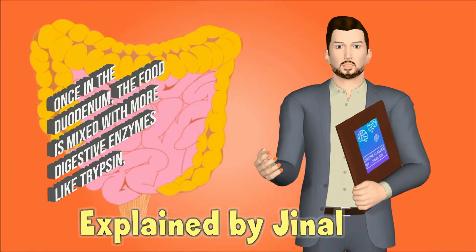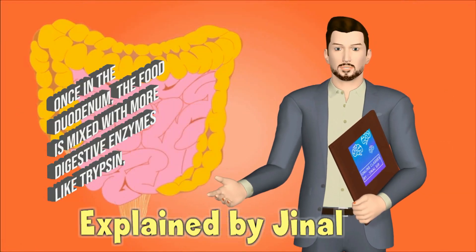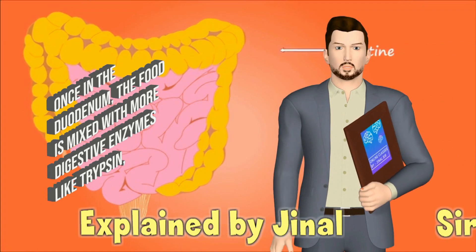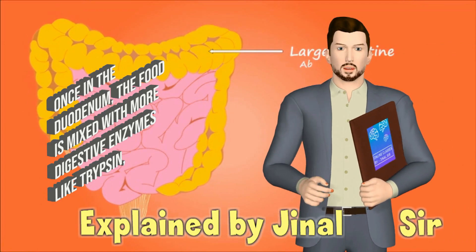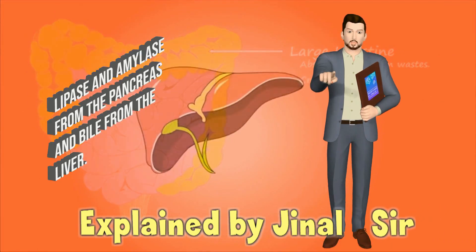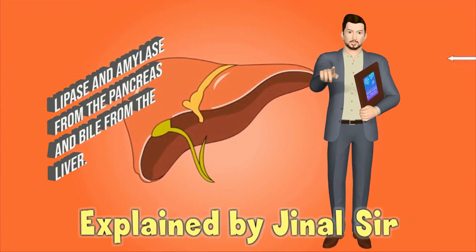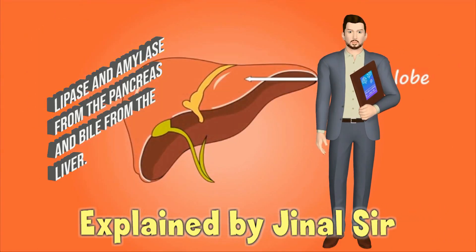Once in the duodenum, the food is mixed with more digestive enzymes like trypsin, lipase, and amylase from the pancreas, and bile from the liver.